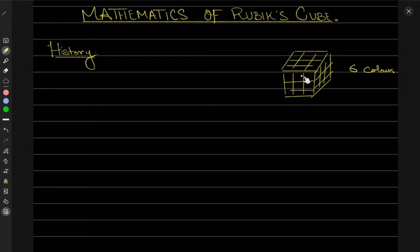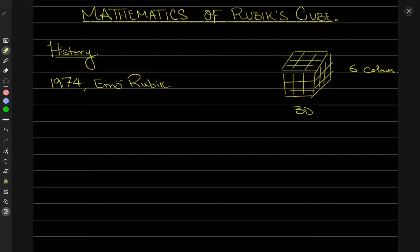The goal is to basically make each face a single solid color — hence we have six faces and therefore six colors. The history is something like this: in 1974, a person named Erno Rubik invented this popular three-dimensional combination puzzle, which is known as a Rubik's Cube.